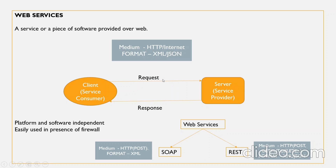The next question is how web services are implemented. They are implemented in two ways: SOAP, which is Simple Object Access Protocol, and REST, which is Representational State Transfer. In SOAP, only the HTTP POST method is supported and only XML format is supported. Coming to REST, it supports all HTTP methods — POST, GET, DELETE, PUT, and others — and accepts XML, JSON, text, and more. So REST is more flexible and less rigid.